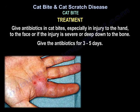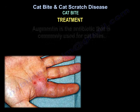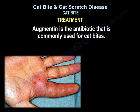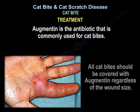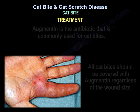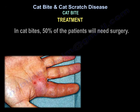Give antibiotics for three to five days. Augmentin is the antibiotic commonly used for cat bites. All cat bites should be covered with Augmentin regardless of wound size. In cat bites, 50 percent of patients will need surgery.